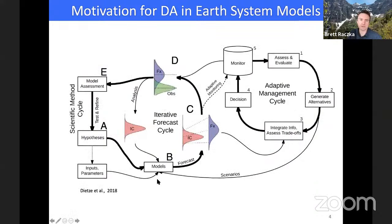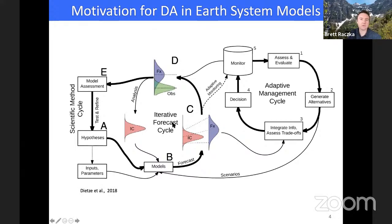This figure from Mike Dietz shows the data assimilation process in context with model creation. You start with a model that provides a forecast based on its assumptions, add observations, and get a refined forecast or analysis. This gives us a better idea of what's happening to the earth system, which we can pass to decision makers. Importantly, DA doesn't replace good model development — it gives us a better ability to assess models and continue to refine and test different hypotheses.